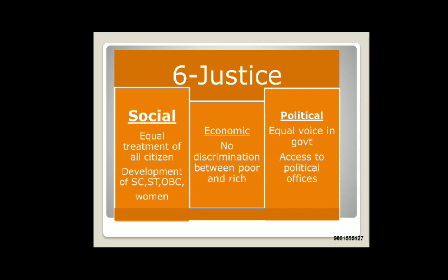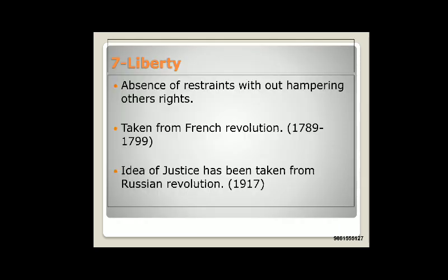The third form of justice ensured by the preamble is political justice. Political justice means all people have equal political rights, equal access to all political offices, and equal voice in the government, irrespective of their social status, economic status, caste, religion, or any other form of social distinction. The ideals of social justice, economic justice, and political justice have been taken from the Russian Revolution of 1917.